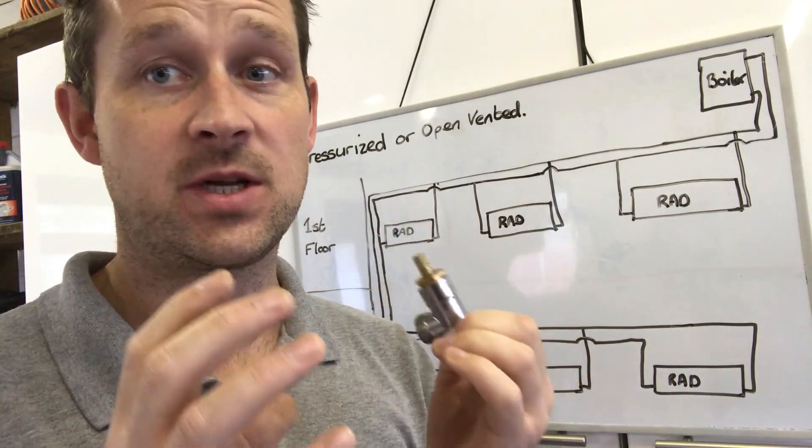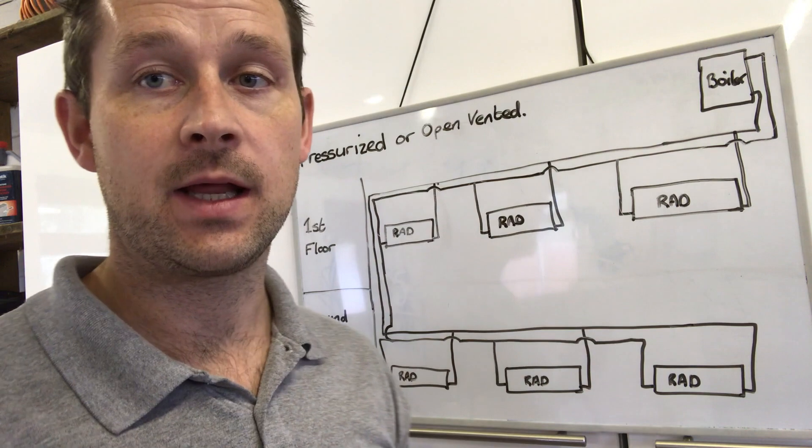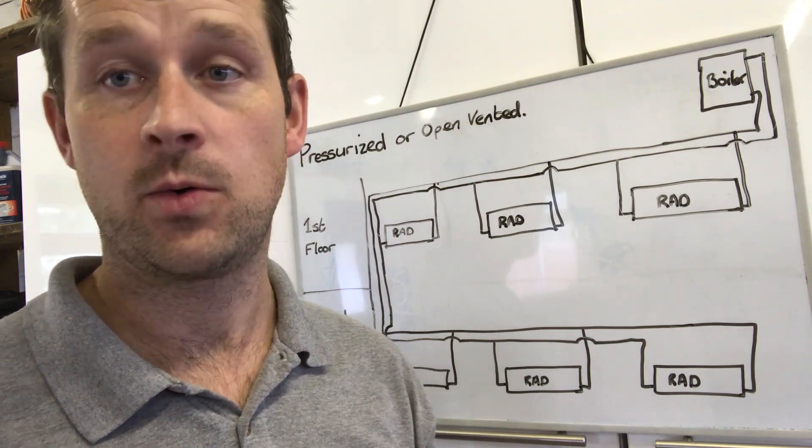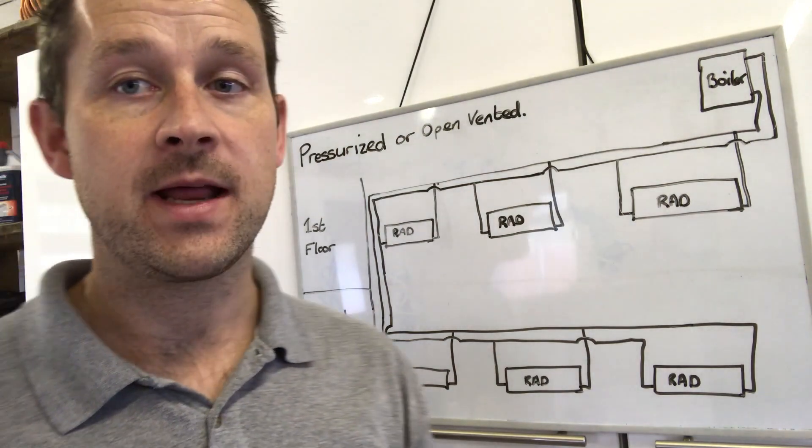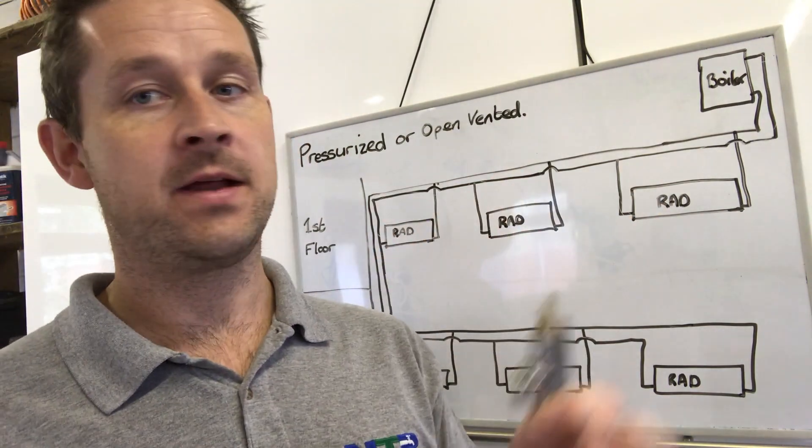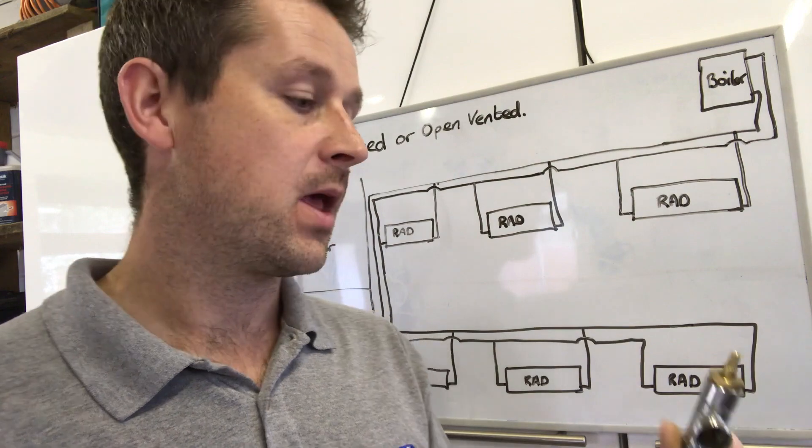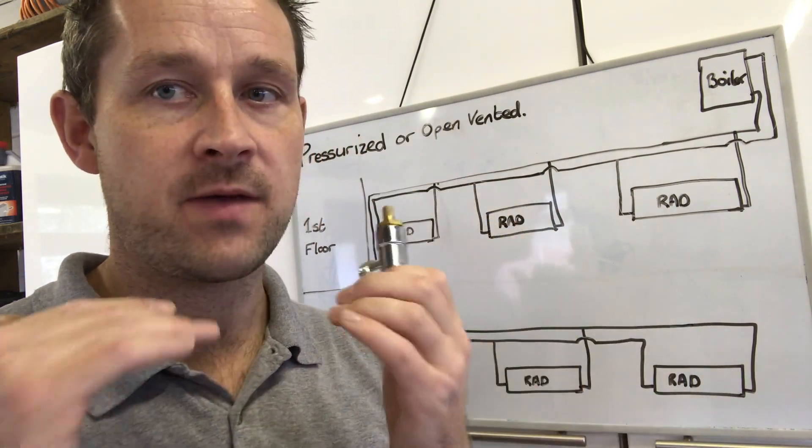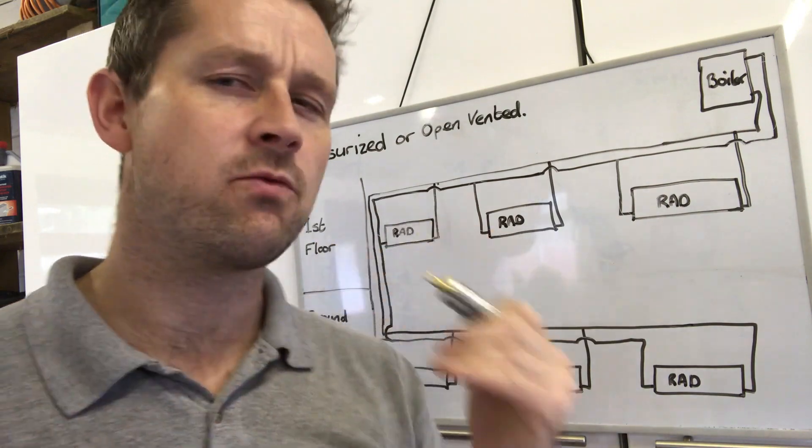To make things as efficient as possible and to circulate the heat around your home and heat your house evenly and adequately. If you do have any problems, you're finding one radiator isn't getting as hot as you'd like, you need to just tweak the system slightly.